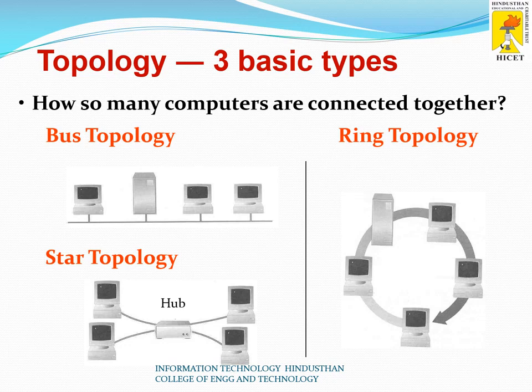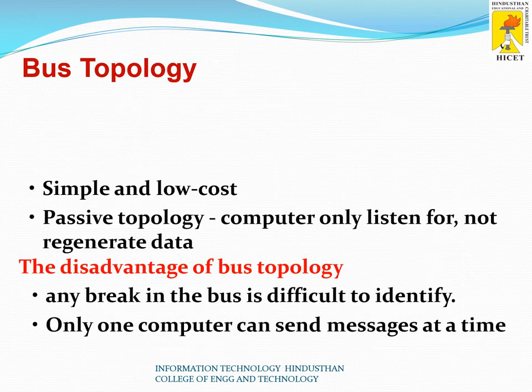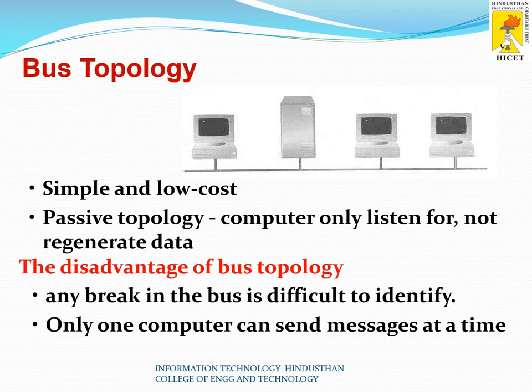In ring topology, all systems are connected in a ring manner, and information passes through all the systems. In star topology, a centralized hub is present and all machines are connected through this hub. Bus topology is a very simple and low-cost topology. It is called a passive topology because the computers only listen and do not regenerate data.